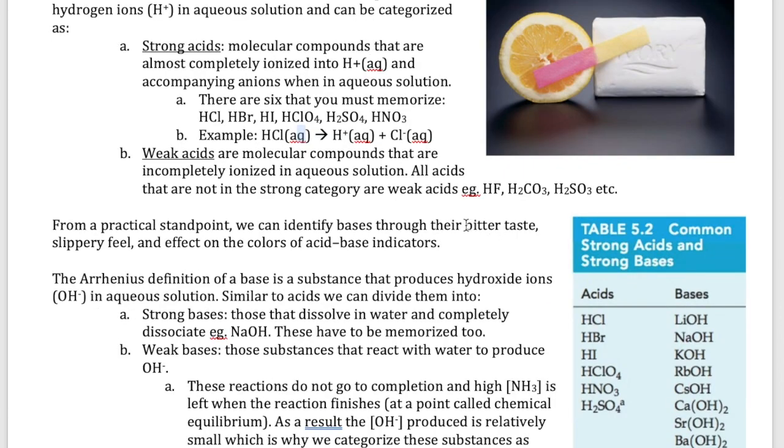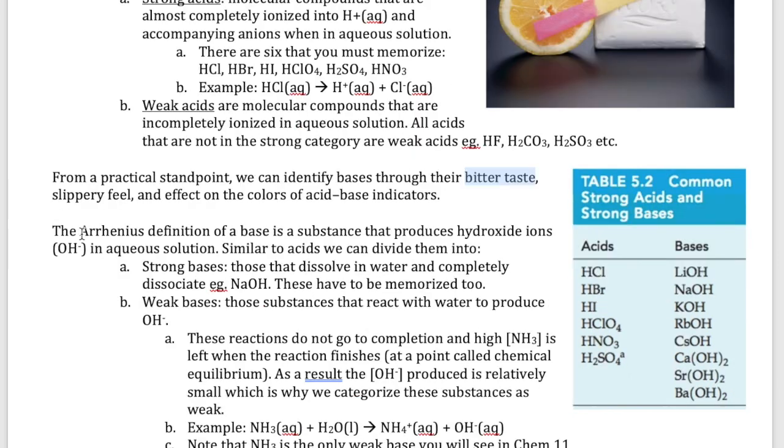We can find out that something is a base. They're bitter. They have a slippery feel to them. And then for indicators, they also change them to a specific color. So here's an indicator that becomes yellow when you expose them to a base, in this case a bar of soap. With the Arrhenius definition, a base is any compound that when dissolved in water will produce hydroxide ions or OH-.